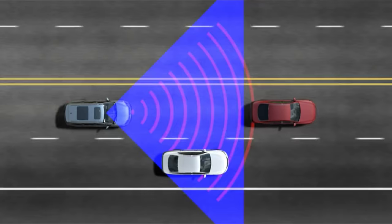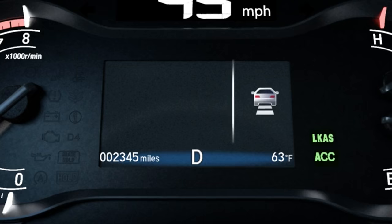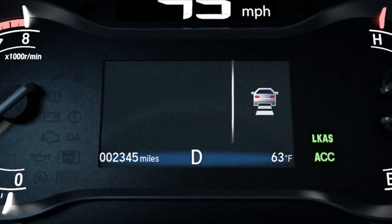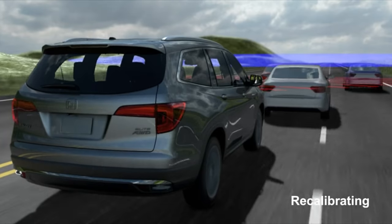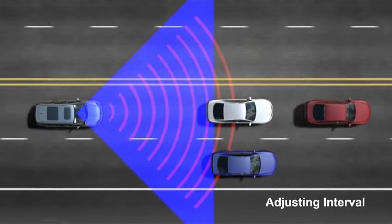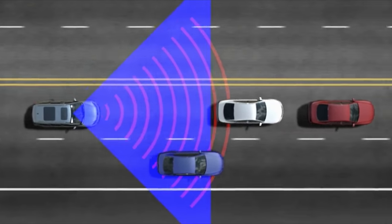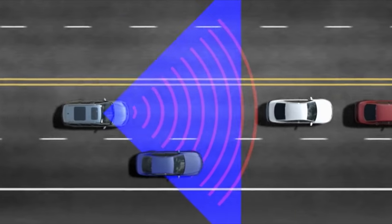The system works by emitting radar waves which bounce off of vehicles ahead and return to the unit. This informs the system of the distance between the two vehicles, and changes in that distance inform the system of the vehicle's relative speeds. Throttle position is adjusted to maintain a set following interval, or light braking can be applied.